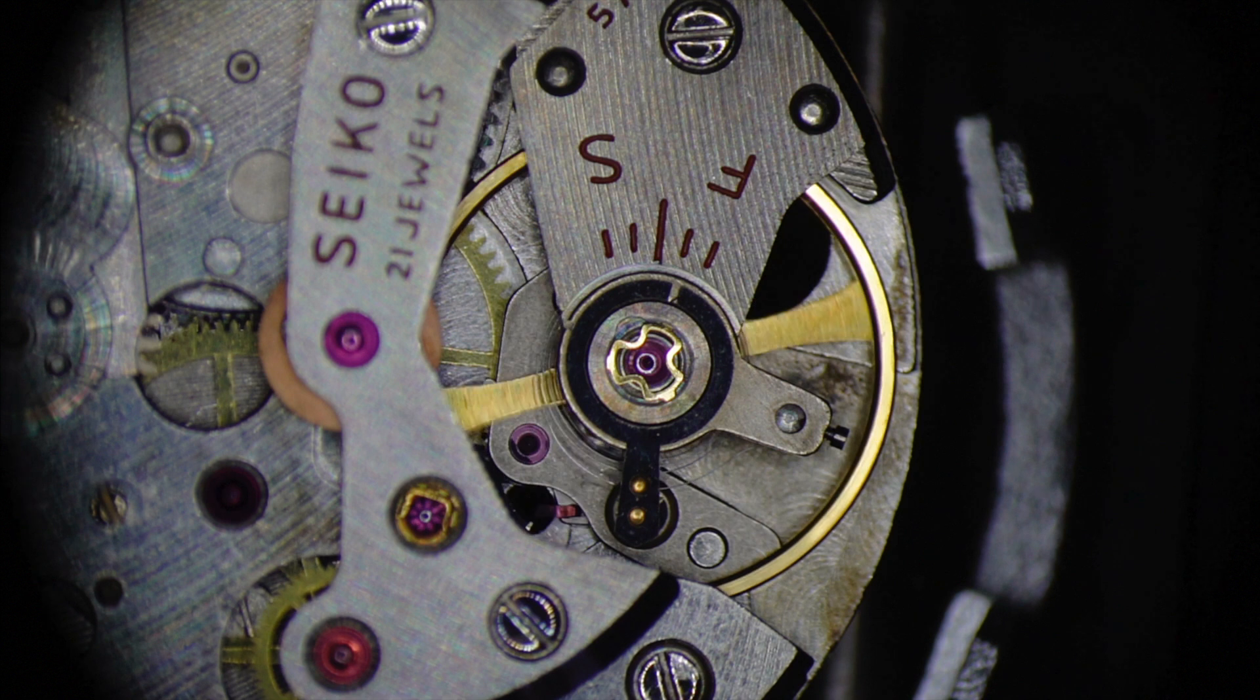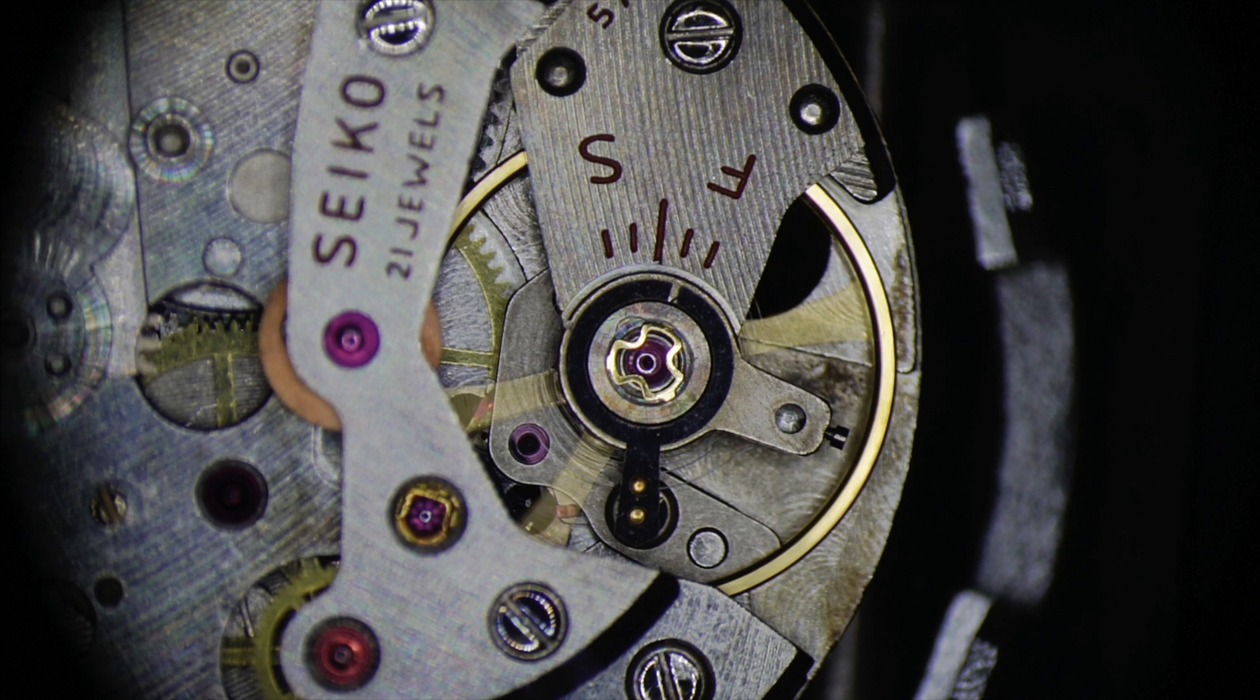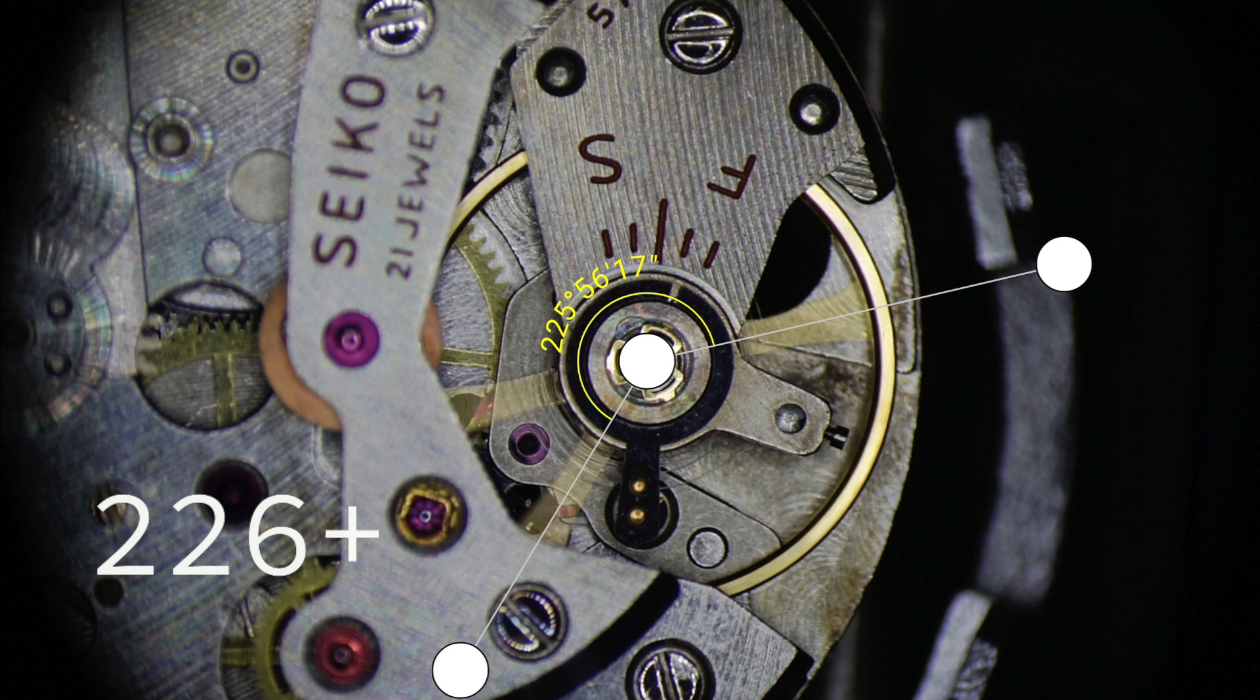The difference between these two positions represents the total angle through which the balance turns between the two turning points, which in this case is 226 degrees plus 360 degrees. That calculation gives us a total rotational angle of 586 degrees.